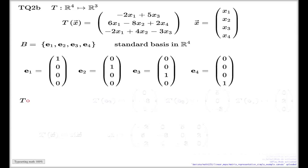All I do now, I apply my T to each individual vector of my basis. And that's very easy. I just take these components and substitute in here. So when I compute T of e1, it will be negative 2, 6, and negative 2. That's the value of T on e1.